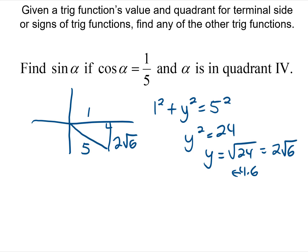Now we're ready to answer what they asked which was what is sine alpha? We'll just use the triangle and sine is opposite 2 square roots of 6 over hypotenuse 5.